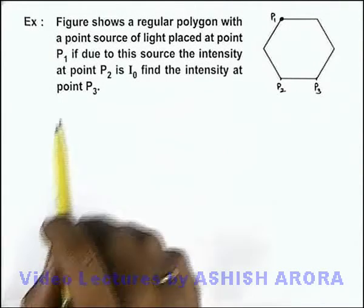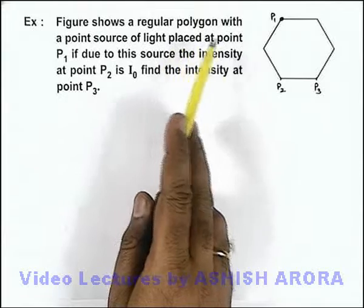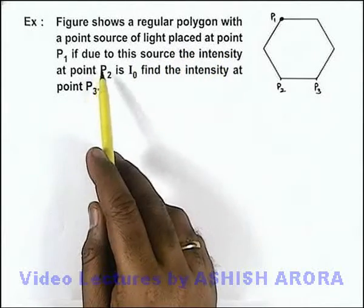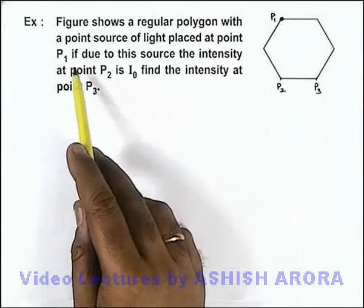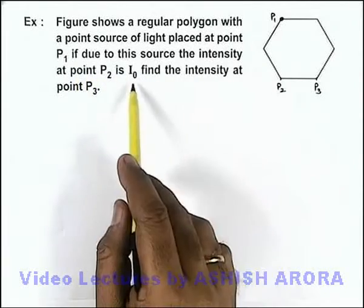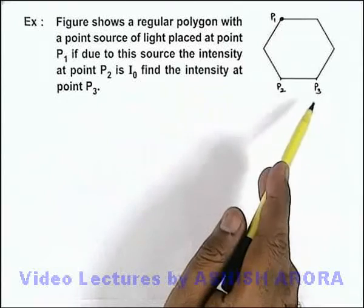In this example, we are given that the figure shows a regular polygon with a point source of light placed at point P1. If due to this source the intensity at point P2 is I₀, we are required to find the intensity at point P3.